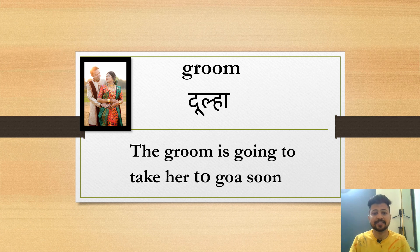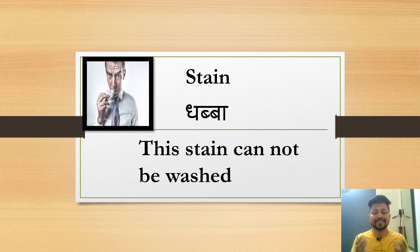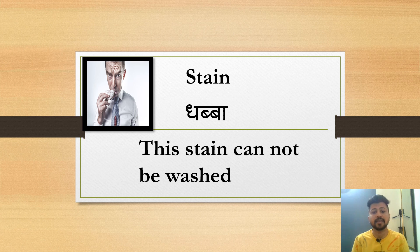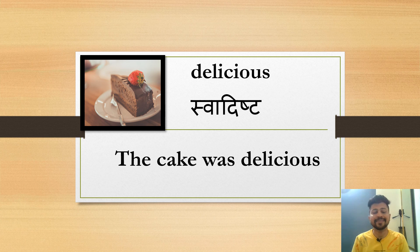The next word is stain, S-T-A-I-N, stain. 'This stain cannot be washed.' Next word is delicious, D-E-L-I-C-I-O-U-S, delicious.